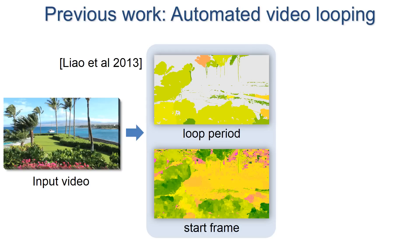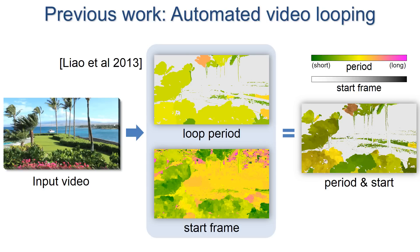We build on the scheme of Liao et al, which determines the best looping period and start frame at each pixel. It is able to automatically freeze regions that cannot form good loops. We visualize the looping parameters using Hue for periods and Luminance for start frames.